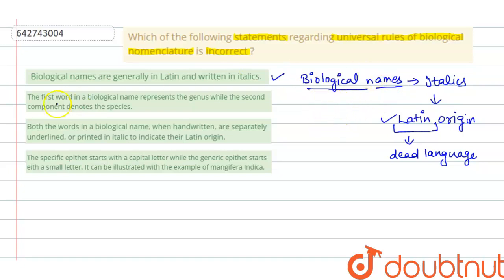So biological names are written in Latin so that they do not change from time to time. Next option is the first word in a biological name represents the genus and the second component denotes the species. So a biological name is composed of two words. The first word indicates genus and